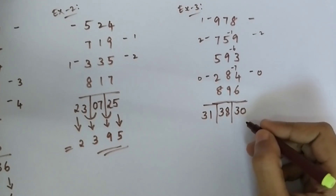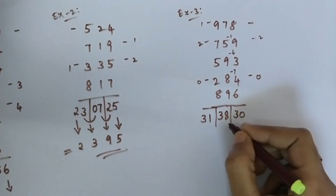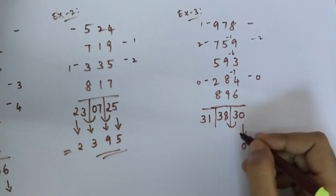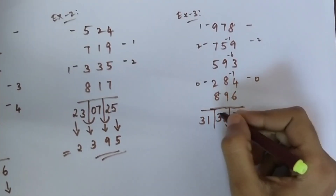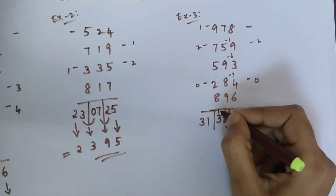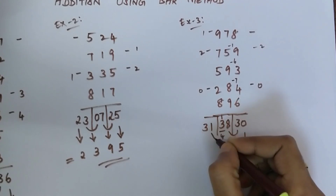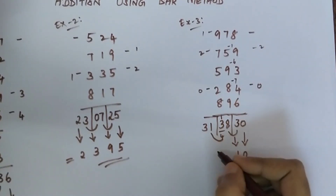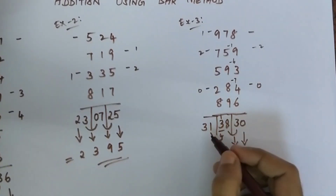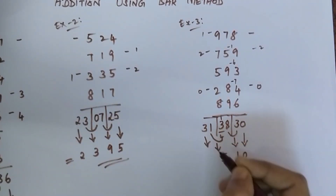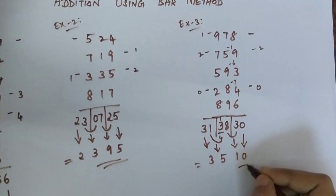Now I will write the last digit as it is. 3 plus 8 is 11 — so 1 here and 1 is carried as a remainder, giving 4. Then 4 plus 1 is 5, and the last number as it is. So my final answer is 3510.